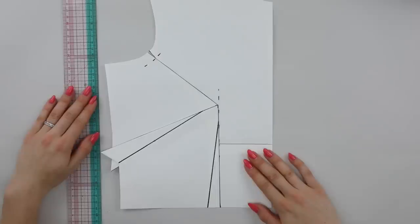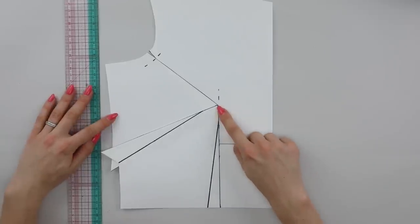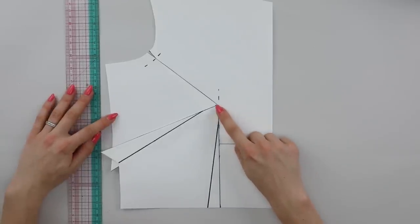Now everything is taped down, you have officially completed your small bust adjustment. We need to finalize the position of the darts. Now your bust apex has moved when you've done a small bust adjustment. This is now the position of the bust apex. It has been raised and moved closer towards the center front.